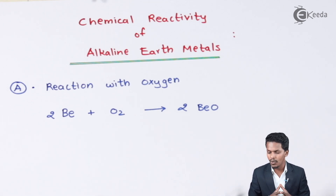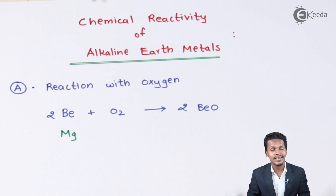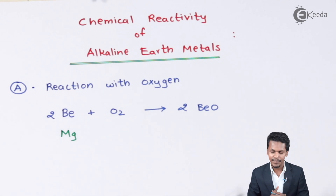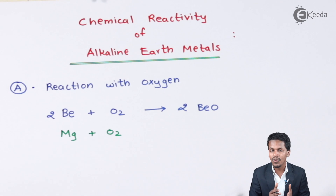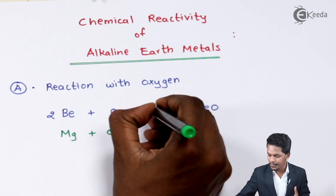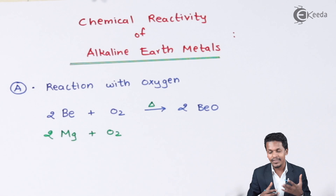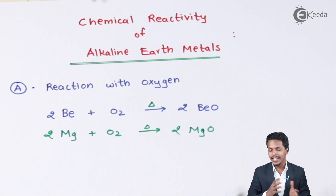Now looking at what happens when magnesium reacts with oxygen: magnesium belongs to the s-block elements and is very electropositive, so it can easily react with oxygen. We need to cut the metal into pieces first so the reaction can occur, since the metal forms an oxide layer on its surface. When ignited, 2 moles of magnesium atoms combine with oxygen molecules to form 2 moles of magnesium oxide (MgO).